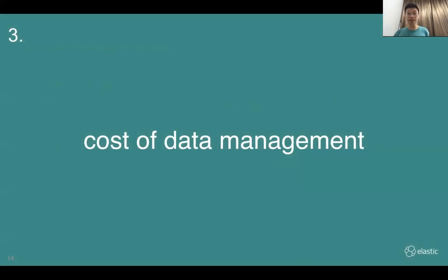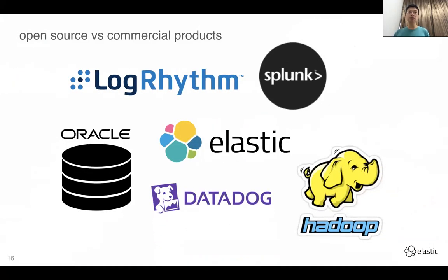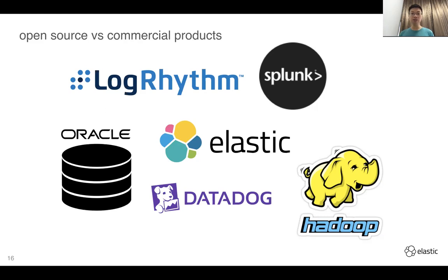The cost of maintaining data management. The first thing is open source versus commercial products. We're talking about how open source software helps solve big data challenges. Elastic is somewhere in the middle — free if you don't need support from Elasticsearch the company, but you can buy a subscription for production environments. So it's an open source product that can also be made commercial.